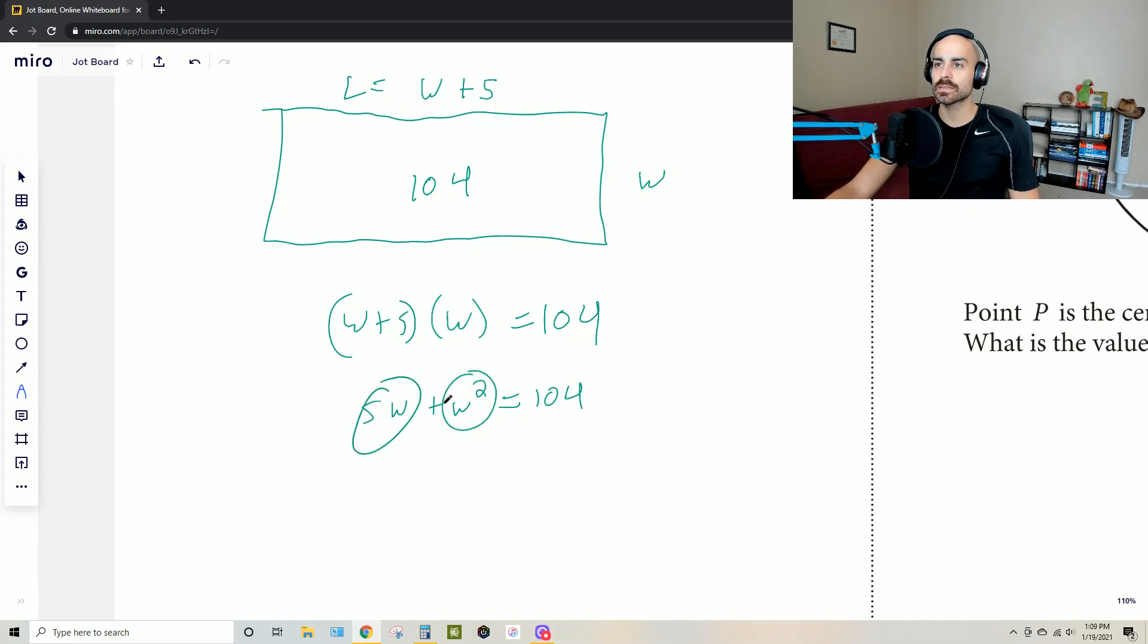We see here that we have the beginnings of a polynomial and a quadratic one at that. So we know how to factor that. That's probably going to be our best bet here. So I'll rewrite this where it's w squared plus five w minus 104 equals zero. It's minus 104 because I'm going to bring this to the other side.